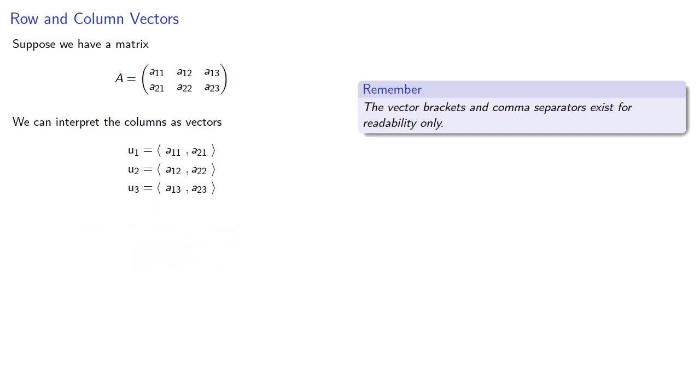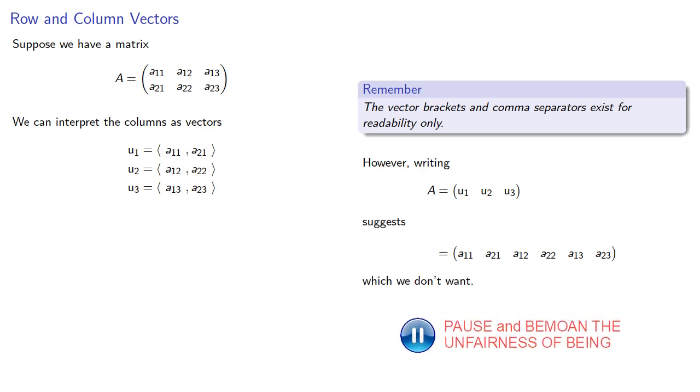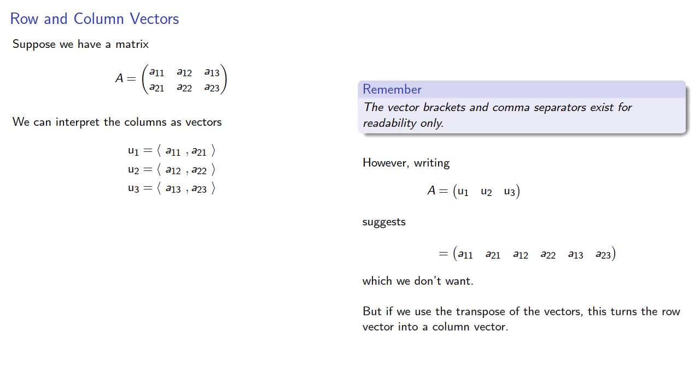There is a problem here, because if we write our matrix as U1, U2, U3, this suggests that our matrix looks like this, which we don't want. We can fix that if we use the transpose of the vectors. Remember, in a transpose, rows become columns. This turns our row vector into a column vector, and this allows us to rewrite our matrix as the vector U1 transpose, U2 transpose, and U3 transpose.